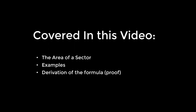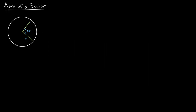In this video I will be showing you how to find the area of a sector. The equation for the area of a sector states that the area is equal to one half times r squared times theta, where r is the radius of the circle and theta is the angle of the sector. I'll be going over this in more detail at the end, but first let's understand what it's saying.